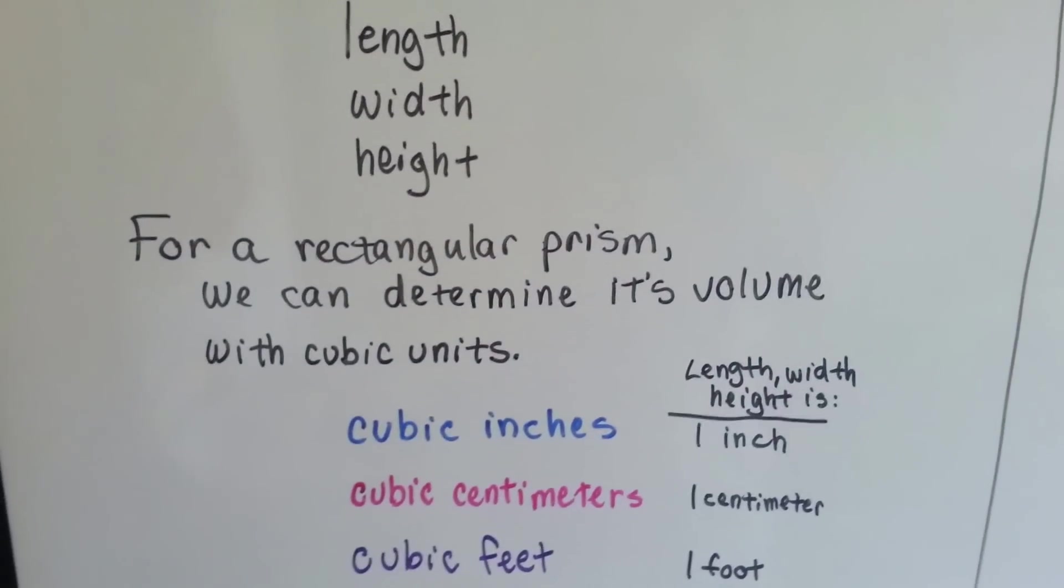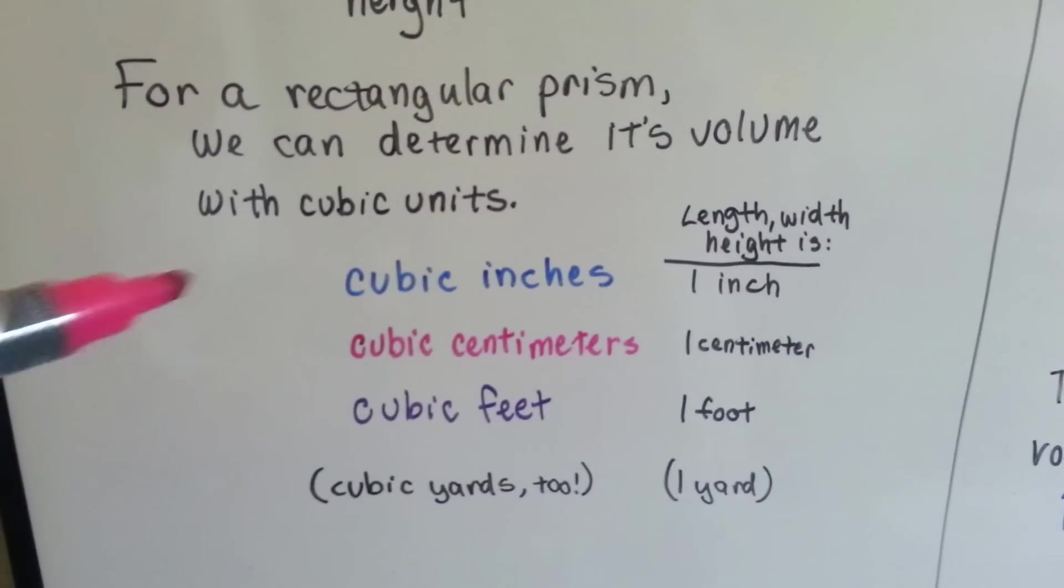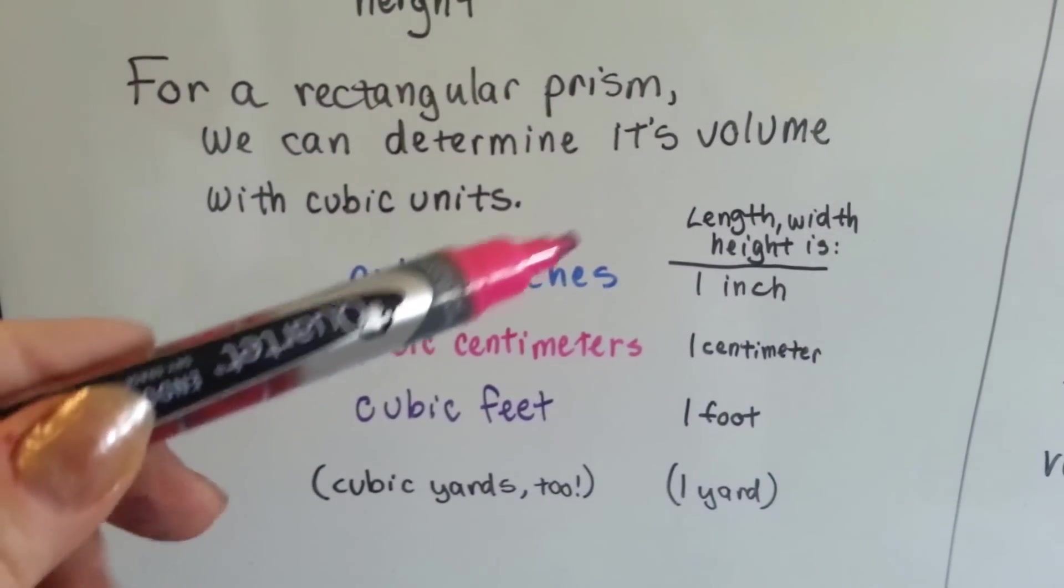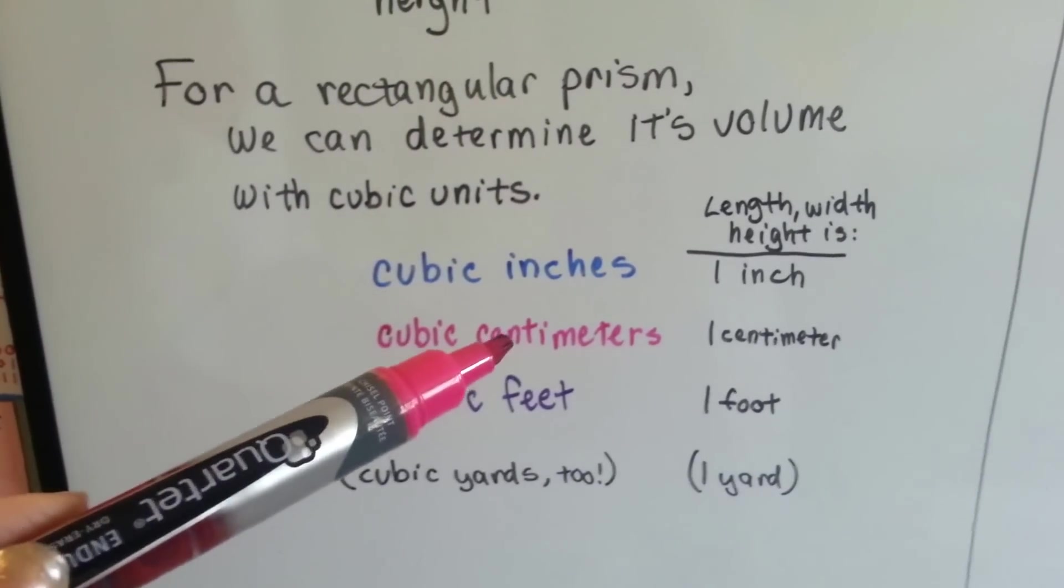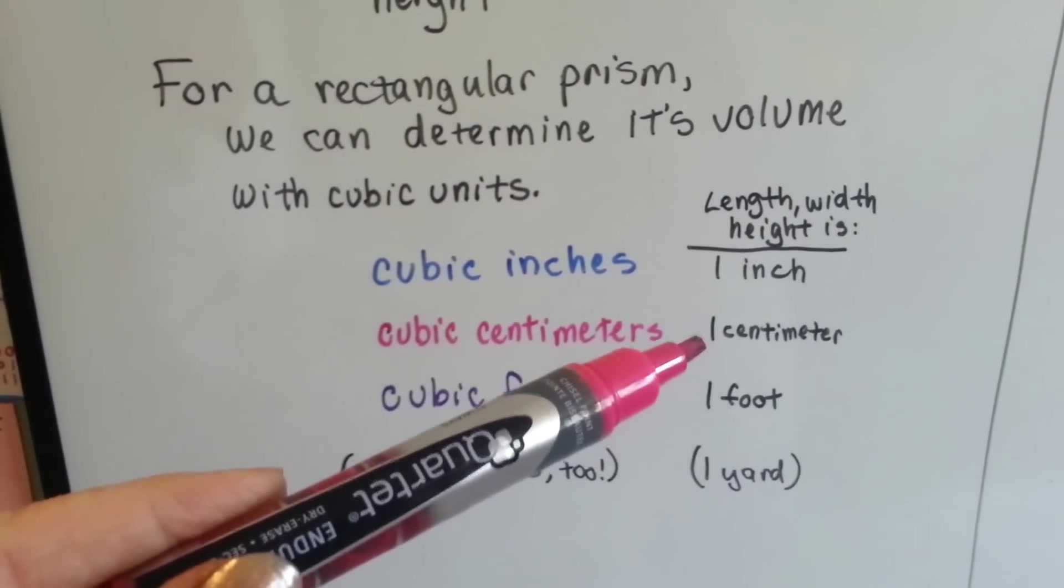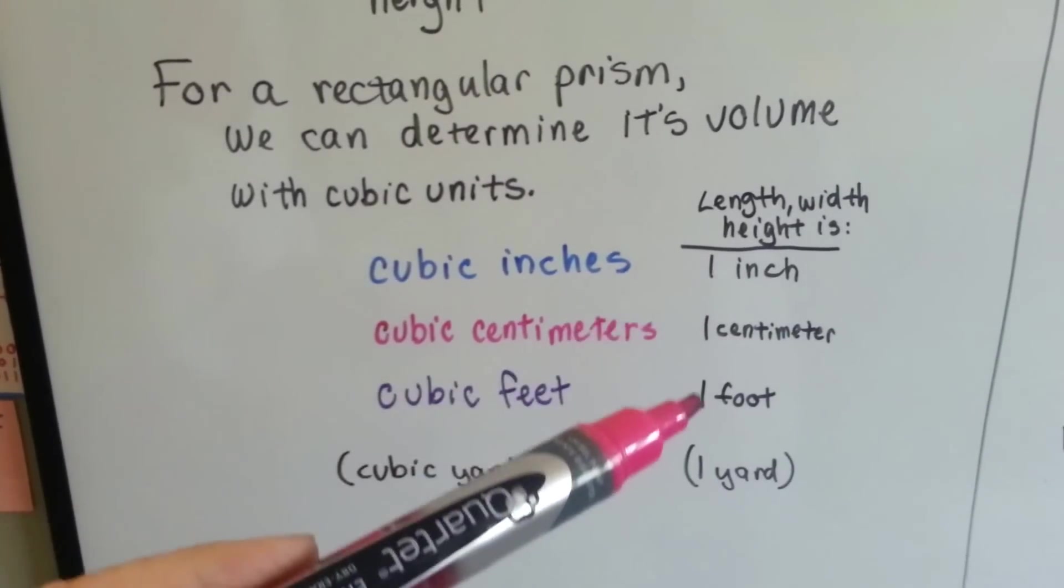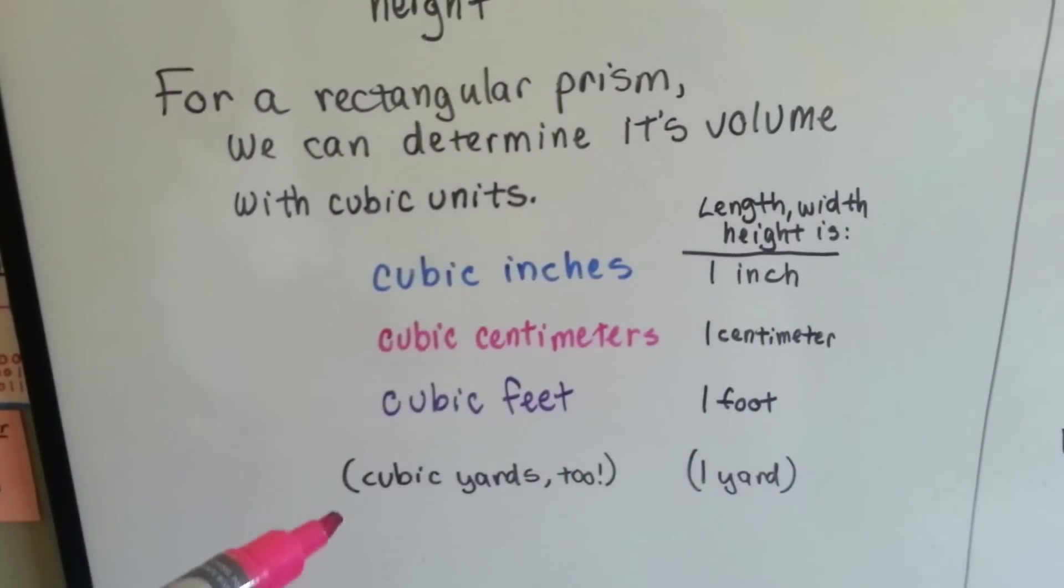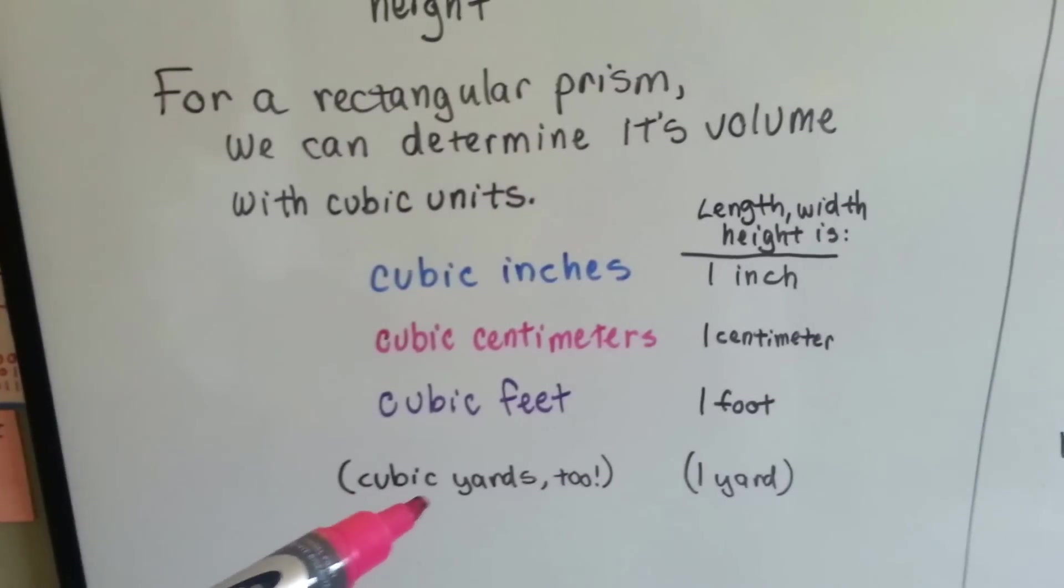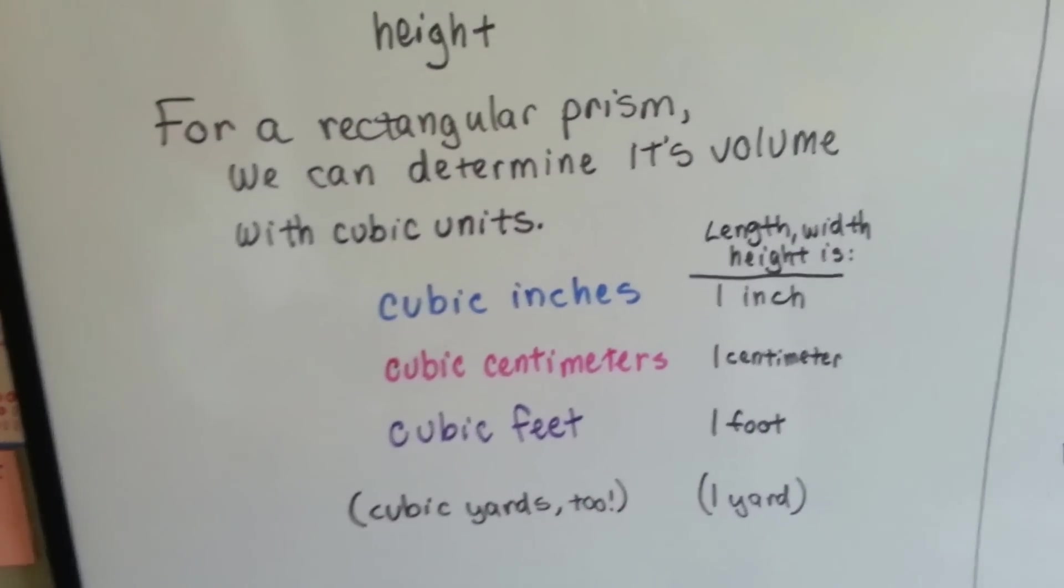For rectangular prism, we can determine its volume with cubic units. So if it was cubic inches, the length, width, and height is one inch. If it's cubic centimeters, then the length, width, and height is one centimeter. If it's cubic feet, then they're each one foot. A foot tall, a foot wide, a foot long. There's also cubic yards too, that would be a yard long, a yard wide, a yard tall.